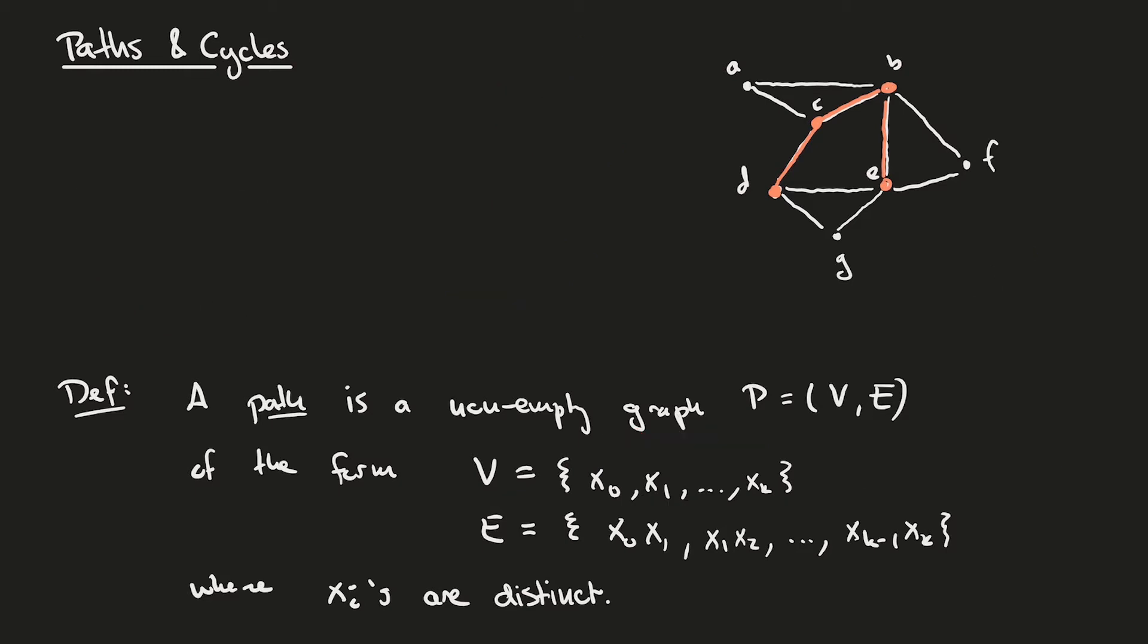To make our life easier, we can refer to a path by its sequence of vertices. For example, we could write P as the sequence of vertices D, C, B, and E. Because there's only one way to get from one vertex to another, because we don't allow multiple edges, this uniquely identifies a path in a given graph.